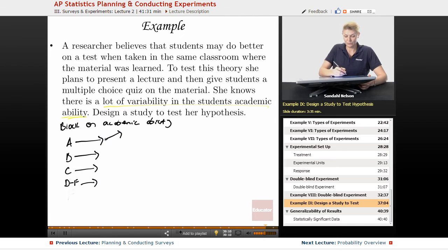And then we're going to randomize within the block. So we'd take an SRS of those who got A's, SRS of those who got B's, C's, and then the SRS. And then we have group one, group two.